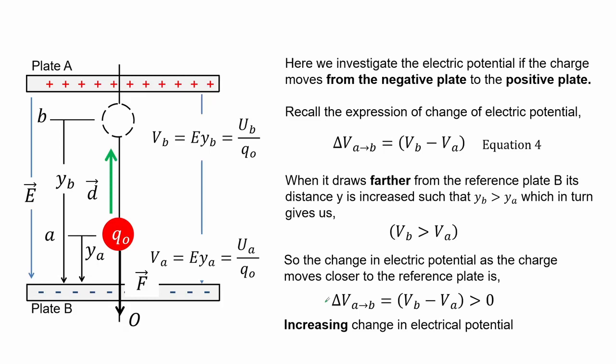Here we investigate the electric potential when the charge moves from the negative plate to the positive plate. Recall the expression for the change in electric potential, equation 4. When the charge draws farther from the reference plate B, its distance Y is increased such that Y_B is greater than Y, giving us the electric potential at B greater than at A. So the change in electric potential as the charge moves farther from the reference plate is an increasing change in electrical potential.